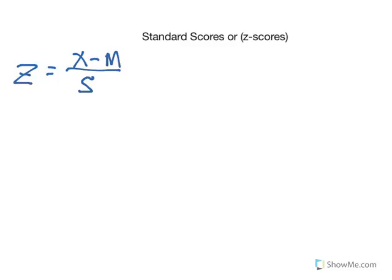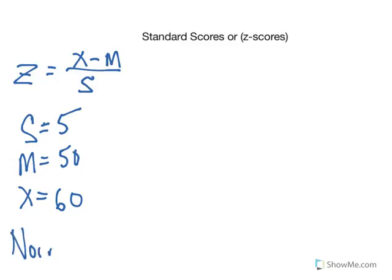So let's assume that we have a standard deviation for some sort of exam of five points. And we have a mean for that set of scores of, let's say, 50, just to make it easy. And let's say that you get on this, you get a 60. Which doesn't feel very good, and let's assume that this is normally distributed. So this is a normal curve.